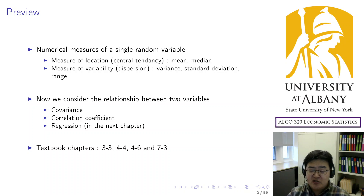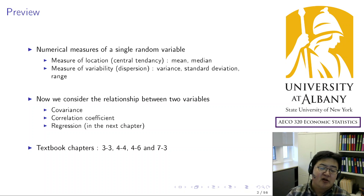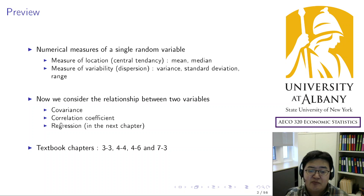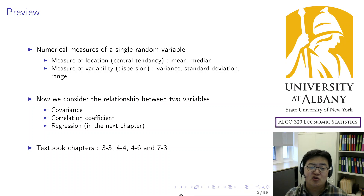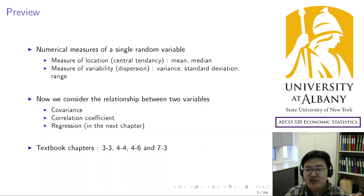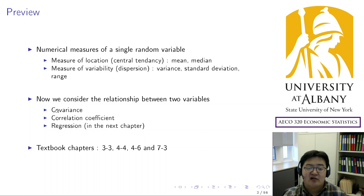Now what we are going to do is study the relationship between multiple variables — in particular two variables for now — and the following chapter will handle a multiple variable case. The two keywords in this chapter are covariance and correlation coefficient. The next chapter's main keyword is regression. Whichever textbook you use, these two keywords should be in the index.